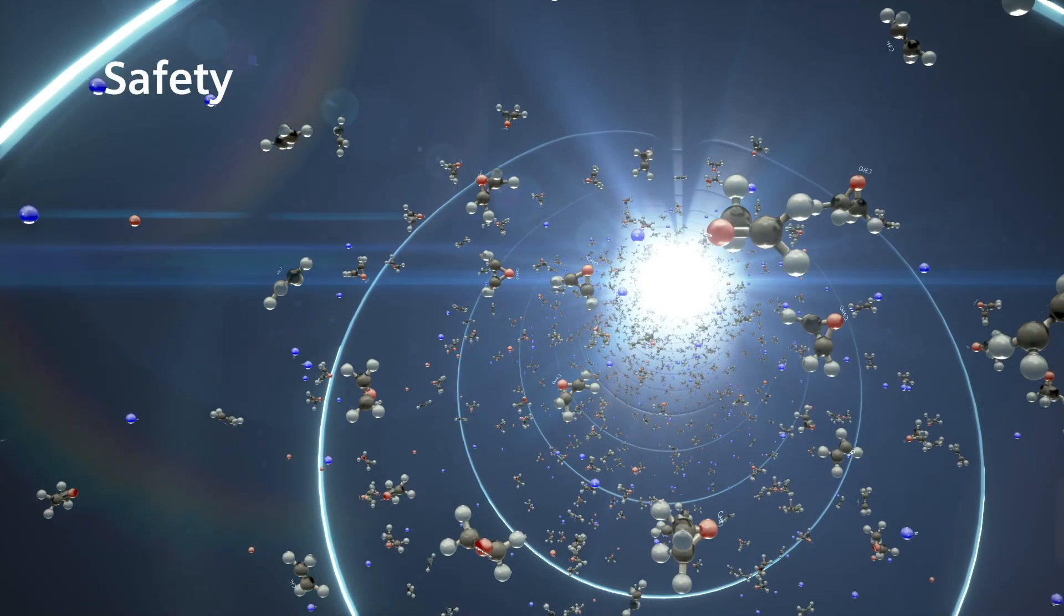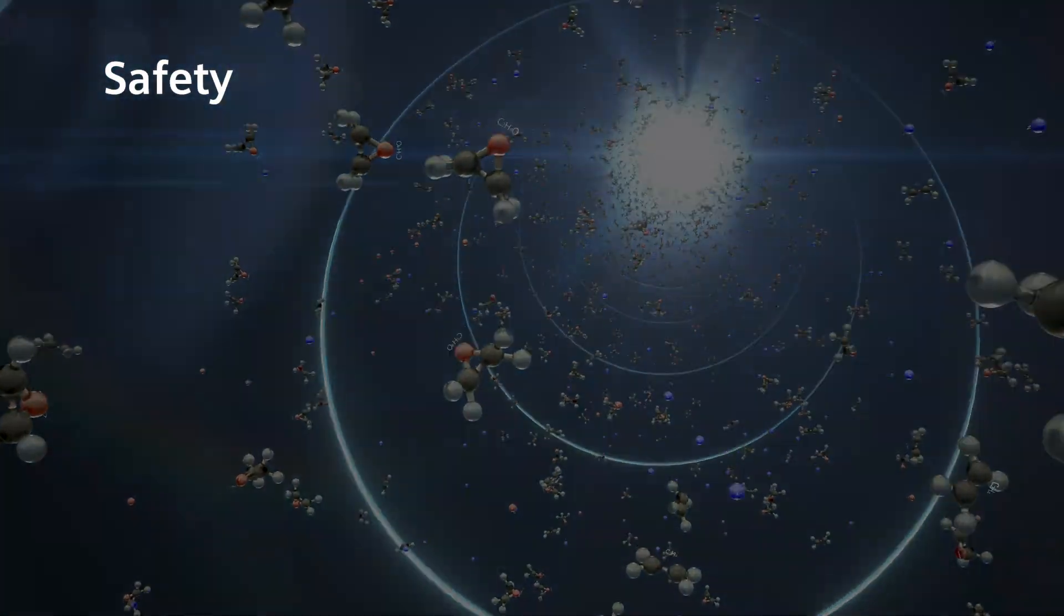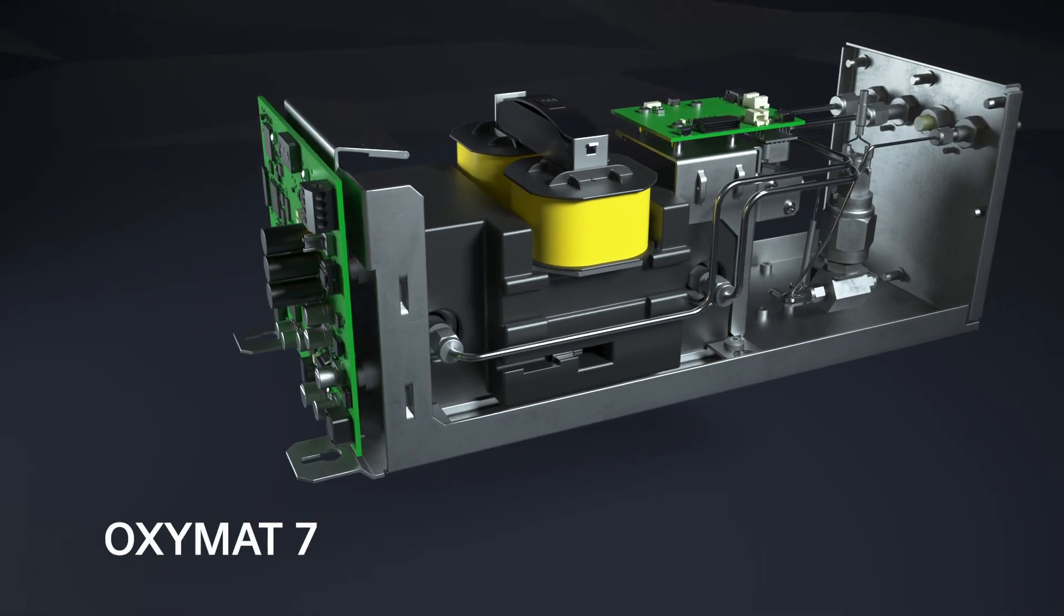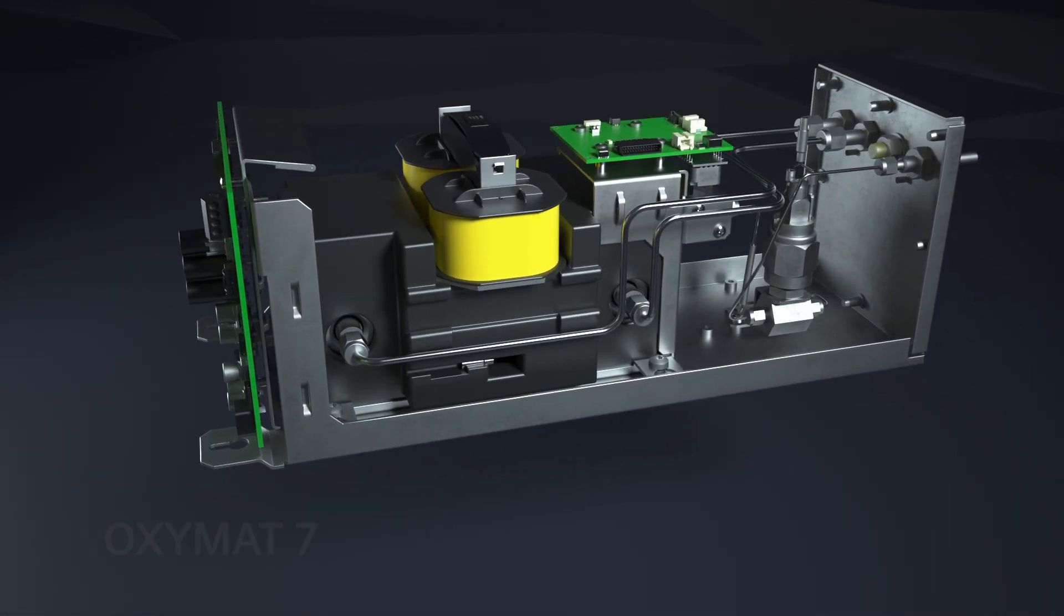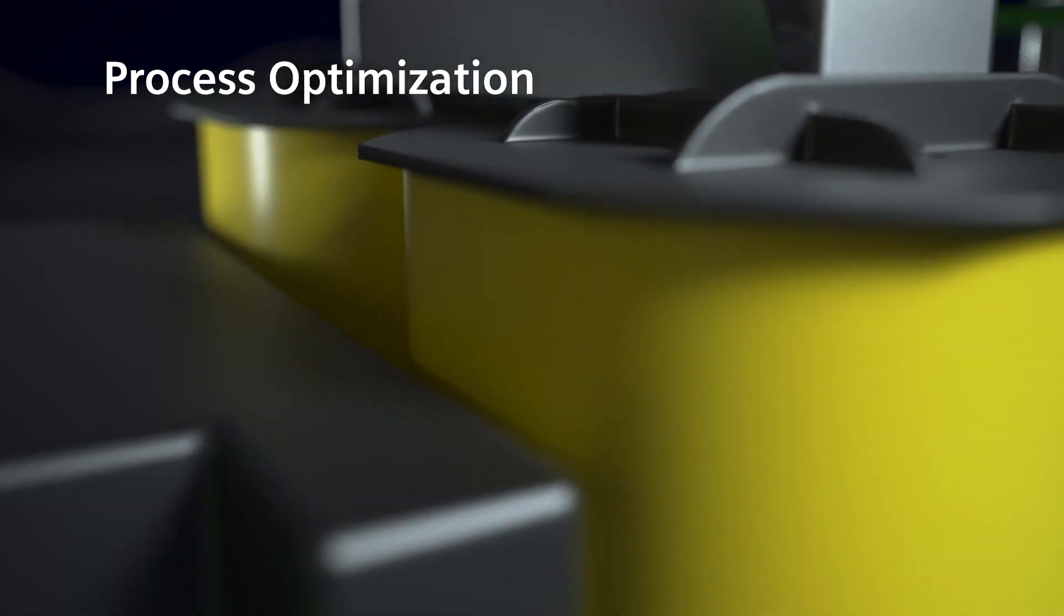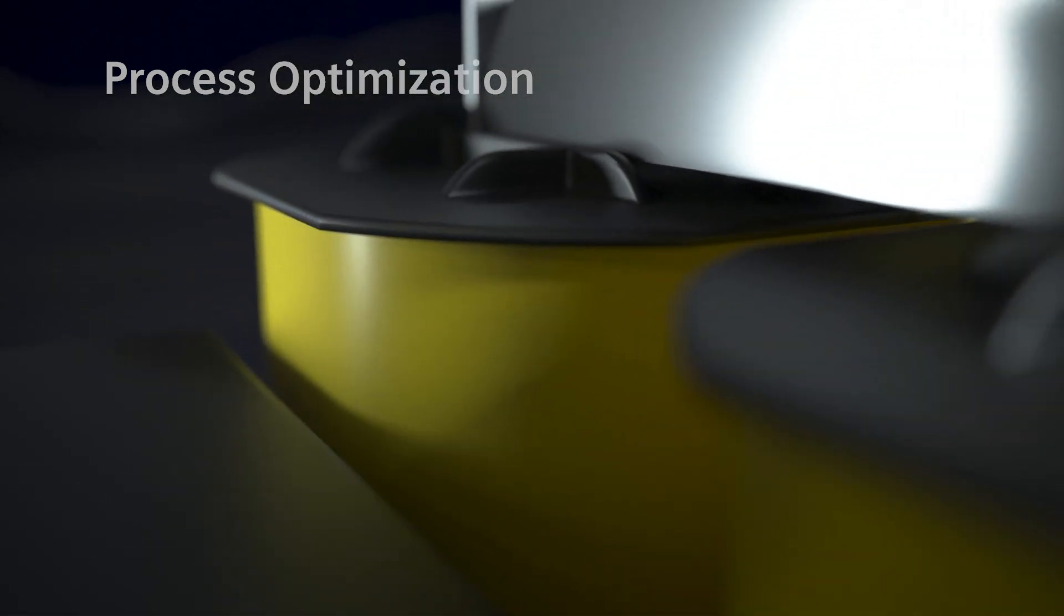For safety reasons, the reactor is flooded with nitrogen. The Siemens OXYMAT 7 measures oxygen extremely reliably, within a measuring range of up to 0.5%.